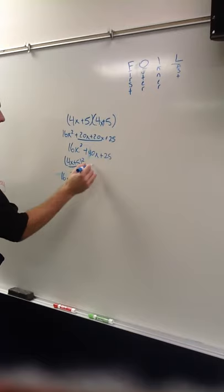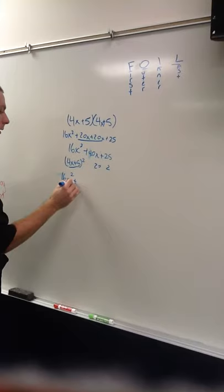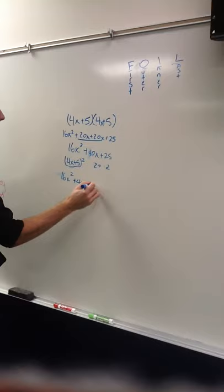So, you get 40 plus 40x, and then you square the last term, plus 25. And then, they're the same.